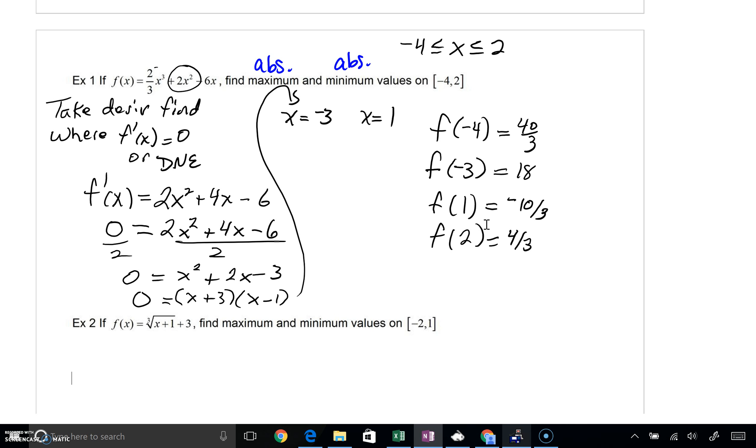There was no place where the derivative was undefined, so we didn't have to worry about that. But we evaluated our function. We plugged in our endpoints, f of negative 4, f of 2. We plugged in our critical numbers. That's where our derivative is 0 or undefined. That's negative 3 and 1.